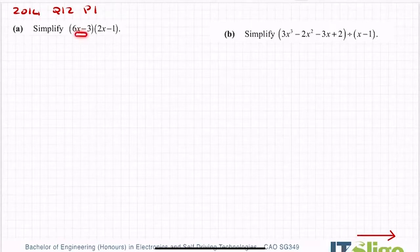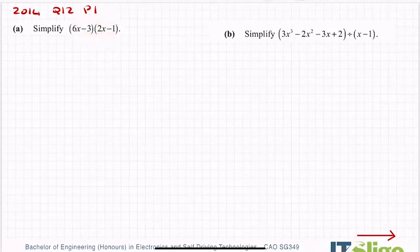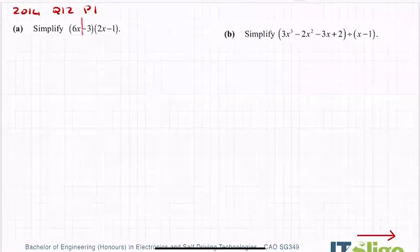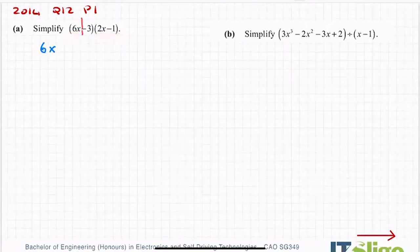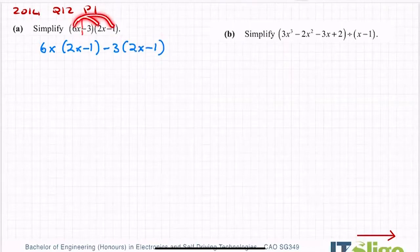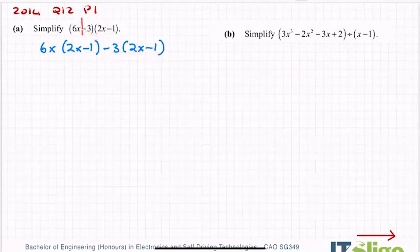So everything in the first bracket must be multiplied by everything in the second bracket. Some people are taught this by arrows — so 6x by those two, minus 3 by those two. Other students are taught to split the first bracket: 6x multiplied by everything in the second bracket, and go back for the minus 3 by everything in the second bracket. Whether you do the arrows, you're doing the same thing.